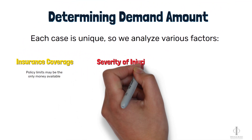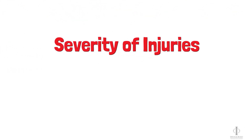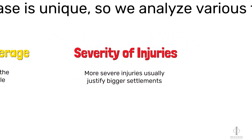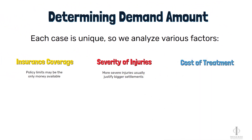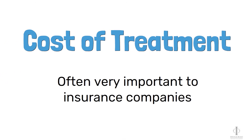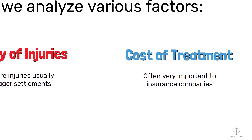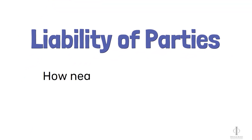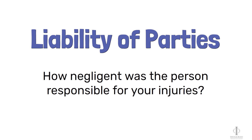The severity of your injuries plays a significant role in determining case value. For example, cases involving catastrophic injuries that permanently affect your life will generally justify a higher demand than less severe injuries. Another major factor is the cost of medical treatment — in fact, your medical bills are often one of the more important factors to insurance companies when they're valuing your claim. Liability is another major consideration. In other words, we look at the behavior of those responsible for your injuries. If the negligence is obvious and egregious, like drunk driving, it can lead to a higher case value compared to situations where liability is less clear.